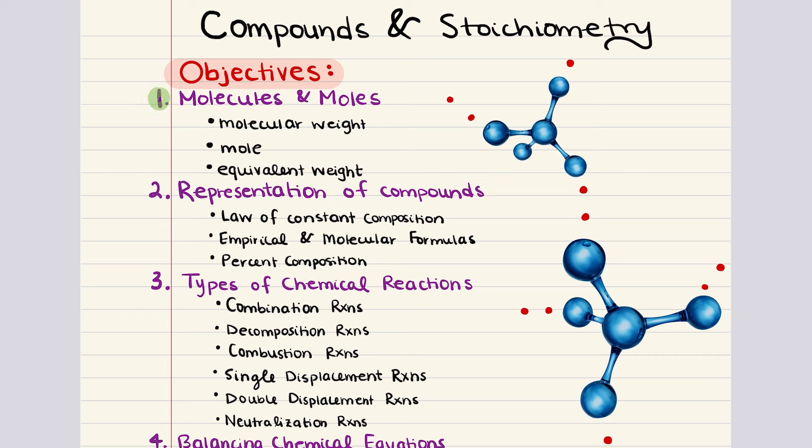Objective one is titled molecules and moles. Here we're going to have a refresher on atomic structure and then define some important terminology and concepts. This is going to include a discussion on molecules and molecular weight, atomic mass unit and atomic weight, formula unit and formula weight, moles and molar mass, equivalence and equivalent weight, and finally normality.